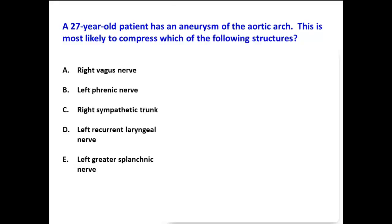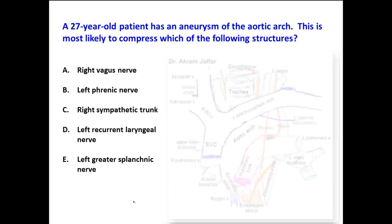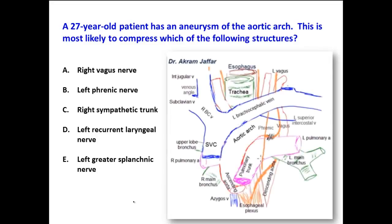A 27-year-old patient has an aneurysm of the aortic arch. This is most likely to compress which of the following structures? Here we have to remember the relations of the aortic arch. Look at this diagram and let's relate it to the options.